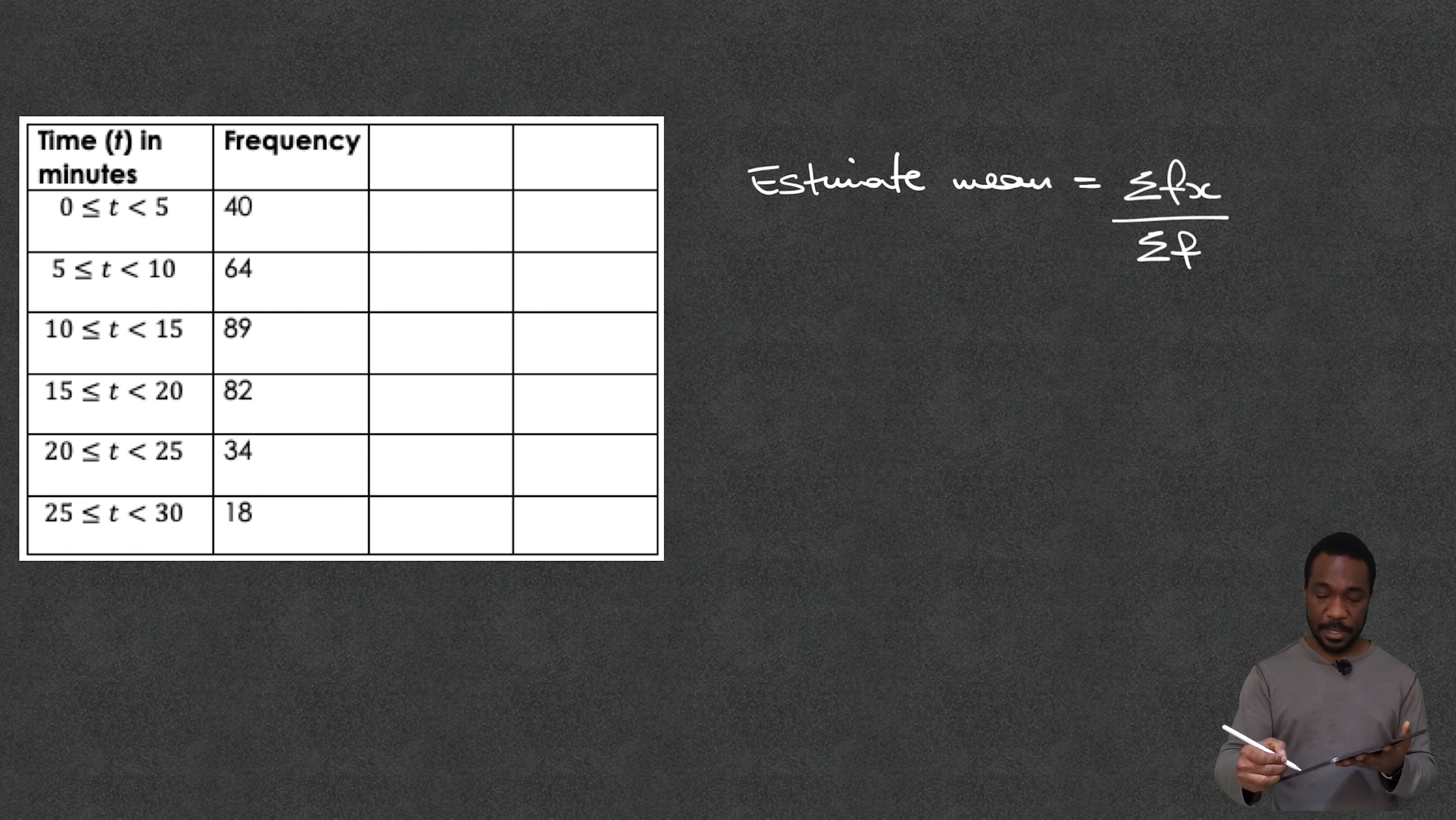Now what I need now is the sum of all this data, the sum of f. So in other words add up all of these numbers and this squiggly e means sum. So every time you see it in statistics you know it means sum, it means to add up. Well when you add that up that becomes 327.